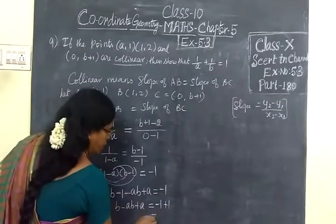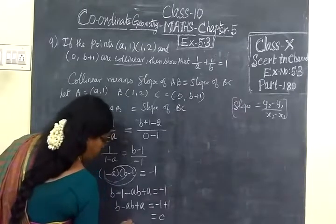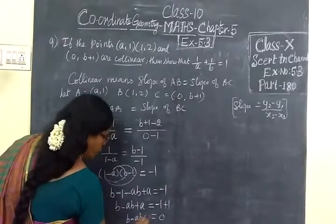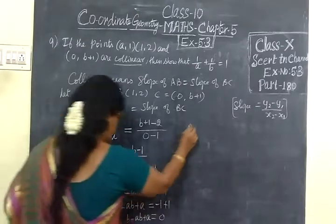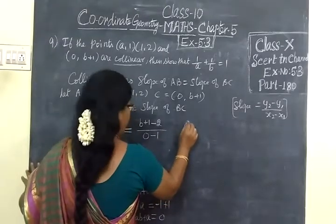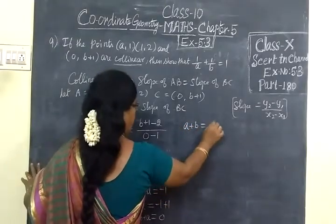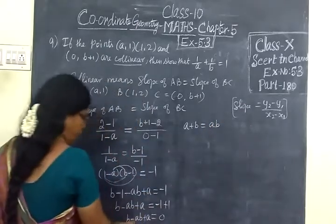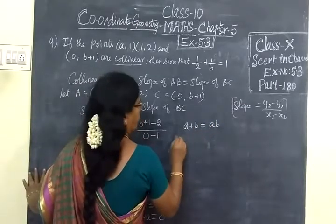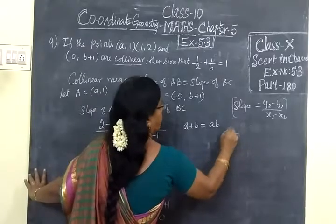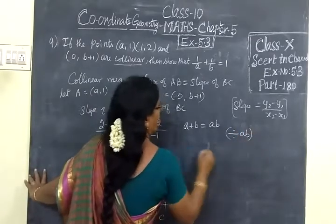Minus 1 plus 1, 0. So B minus AB plus A. A plus B equal to AB. So divide by AB, divide everything by AB.